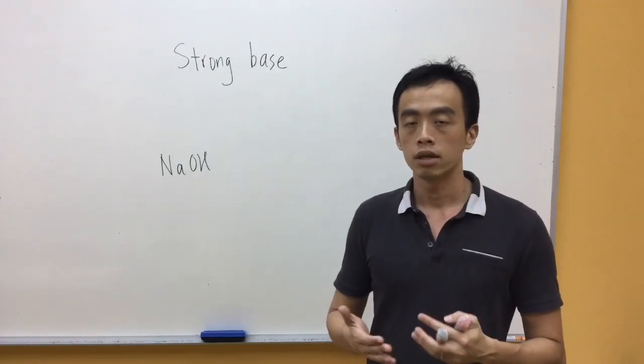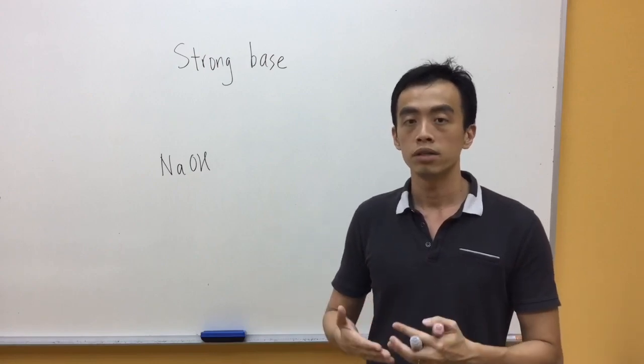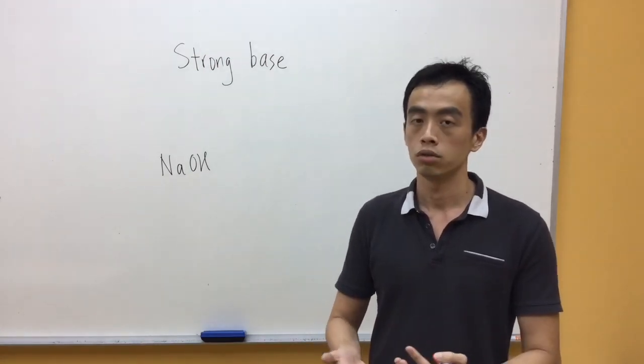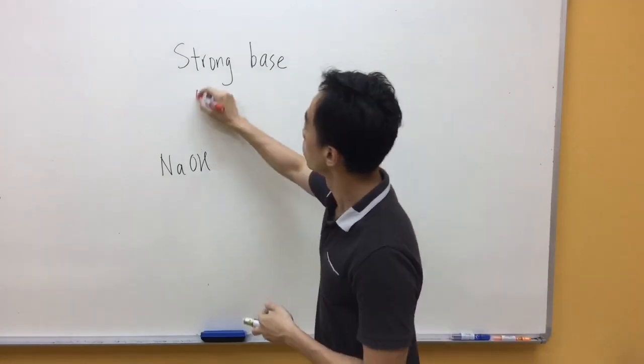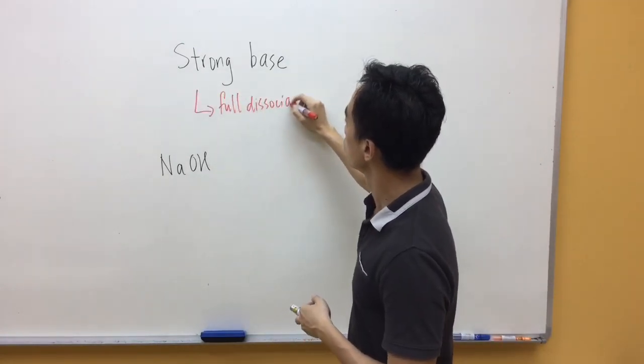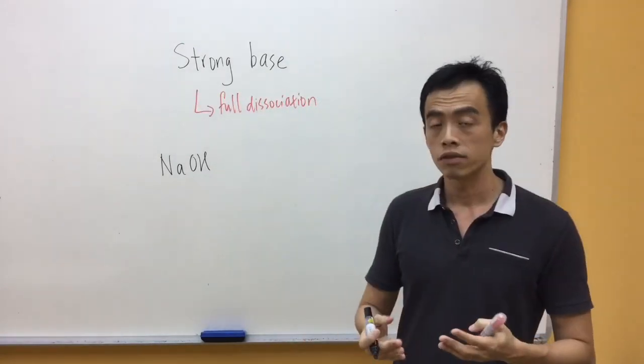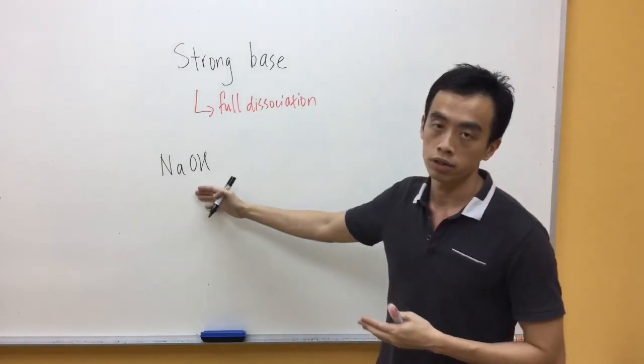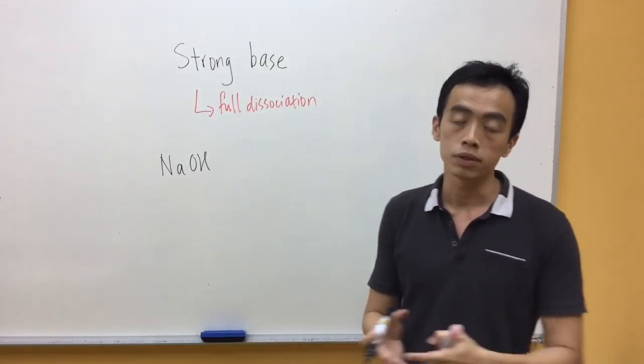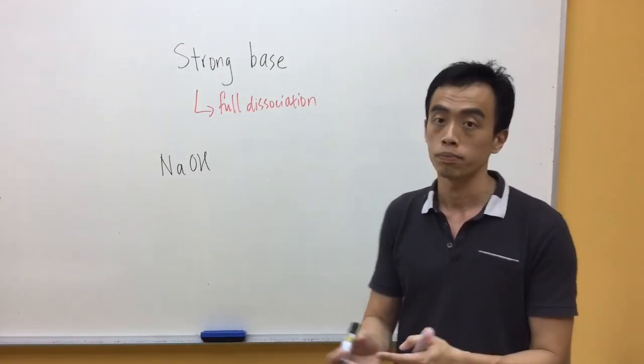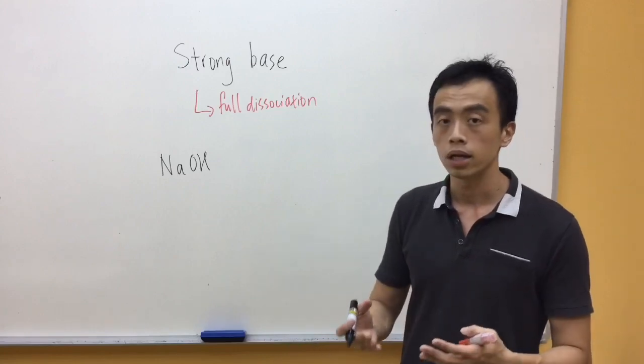Now for strong bases, the idea is the same. Strong bases just means that this base dissociates fully in solution. So again if I have a strong base, for example sodium hydroxide, if I dissolve this in solution, 100% of this will give me Na plus and OH minus. So again it's represented by a full arrow.